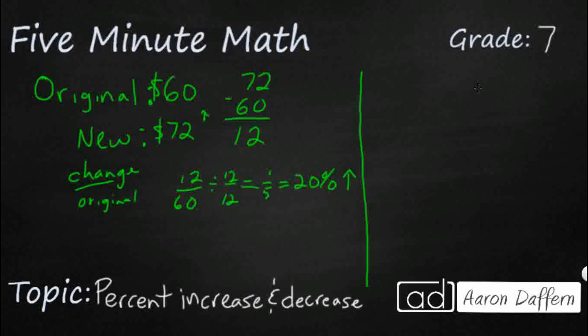We can also do this same thing with our proportion. So we've got 72 over 60. Remember, we're going to keep our original down at the bottom because that's 100% of the original cost. Do a little bit of cross multiplication.